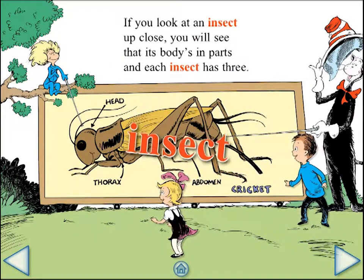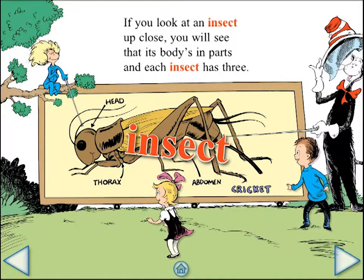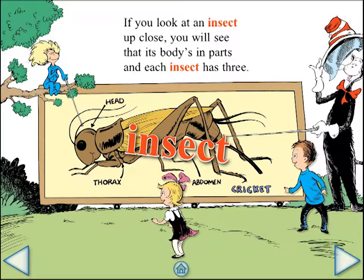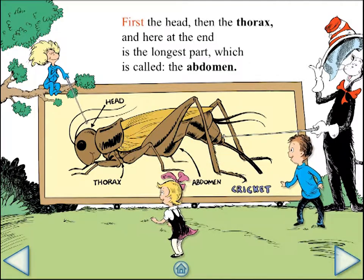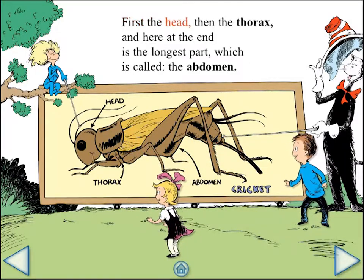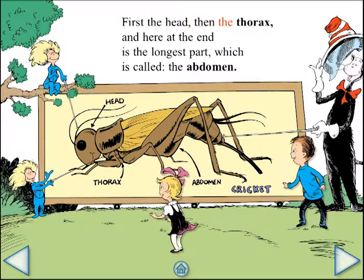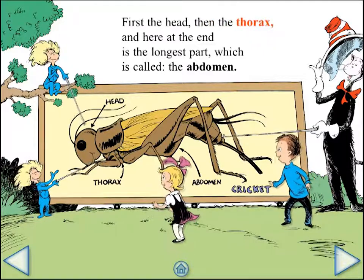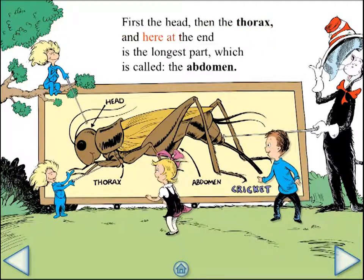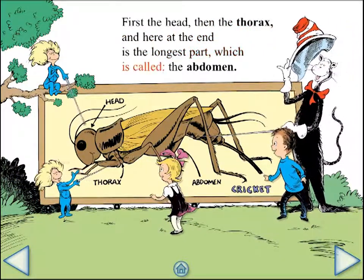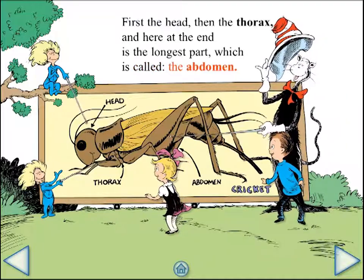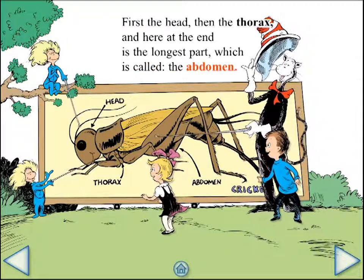Cricket — insect. First, the head. Then, the thorax. And here at the end is the longest part, which is called the abdomen.